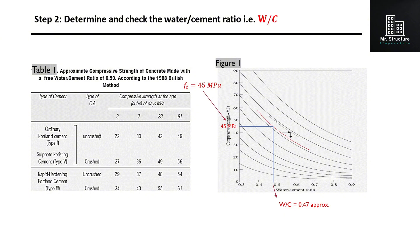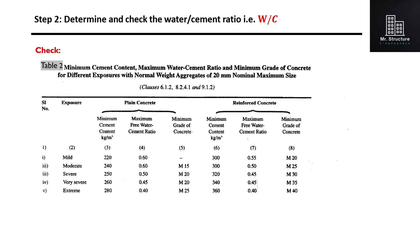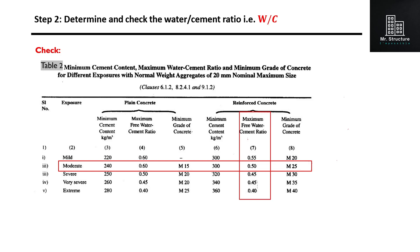We will use this reference curve to determine the water-cement ratio based on the target strength. Choose the value of target strength on the y-axis, that is 45 MPa. Draw a horizontal line to meet the reference curve, then draw a vertical line from the intersection point on the reference curve to meet the x-axis. This point on the x-axis gives the value of the water-cement ratio, which is approximately 0.47. This value needs to be checked with the maximum value of water-cement ratio. The exposure condition is moderate, and for reinforced concrete with moderate exposure condition, the maximum free water-cement ratio is 0.5. Our calculated value of 0.47 is okay.